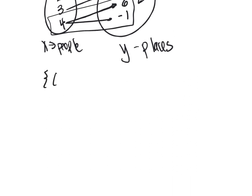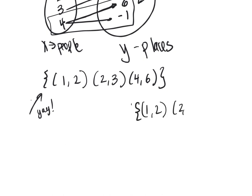So if you have (1,2), (2,3), (4,6), that's a function. But if you have (1,2), (2,3), (1,6), that's not okay. Because here, 1 is trying to map to 2 and it's trying to map to 6 at the same time. So this is not a function.